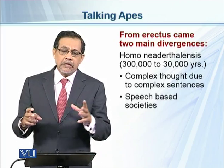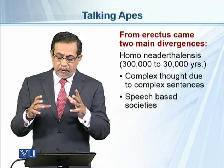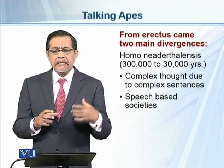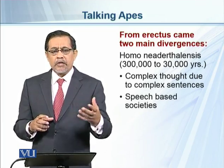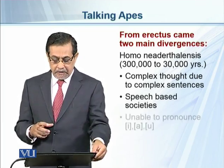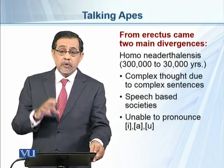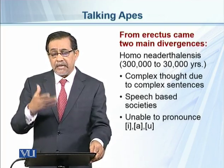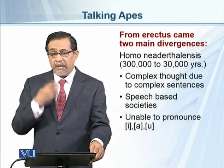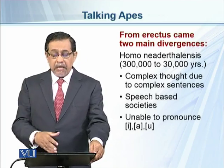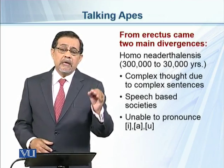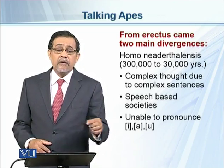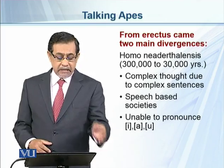Homo neanderthalensis had speech societies — they could communicate through speech and were able to use certain sounds. However, they were not able to use certain sounds such as vowels, because of their articulators. For example, they could not produce front close, front open, or front back sounds.